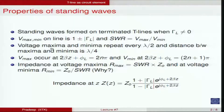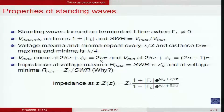On a transmission line, voltage maxima and minima repeat every lambda/2, and the distance between a maximum and a minimum is always lambda/4. The maximum magnitude occurs whenever the phase term goes to n*pi, i.e., 2*beta*z + phi_L = n*pi, where n must be negative since z=0 is at the load and z=-L is at the input. Minima occur when the phase term goes to (2n+1)*pi.